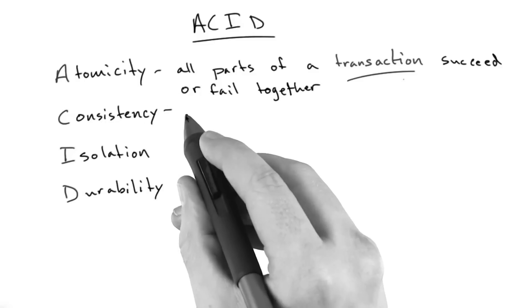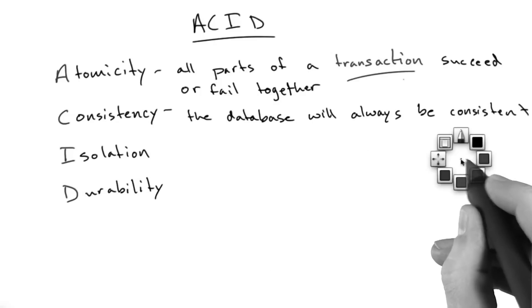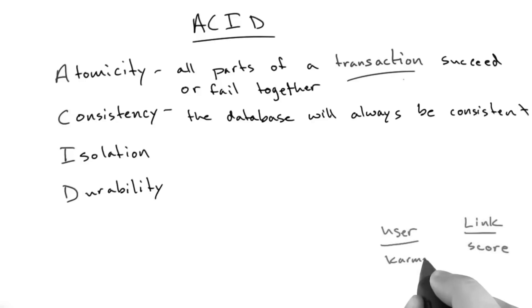Consistency refers to the notion that the database will always be consistent. And to work from our Reddit example, let's talk about this idea where we have a link and a user who have properties.